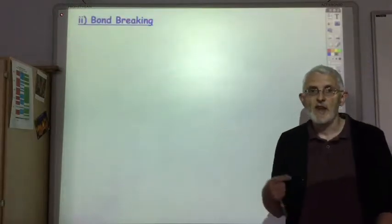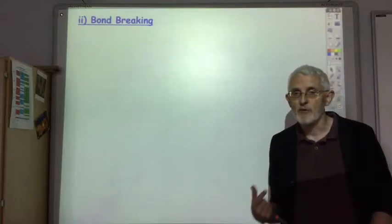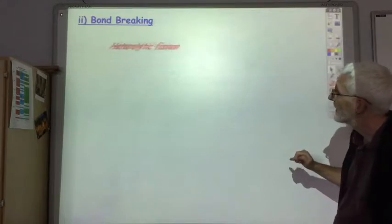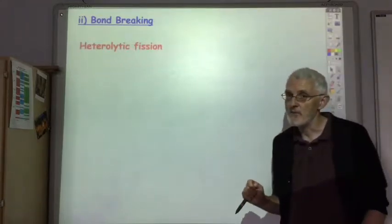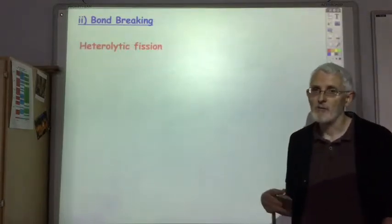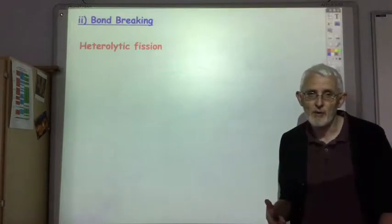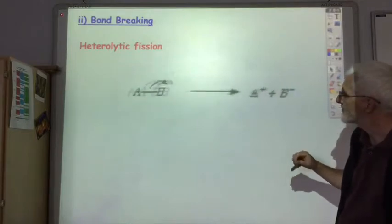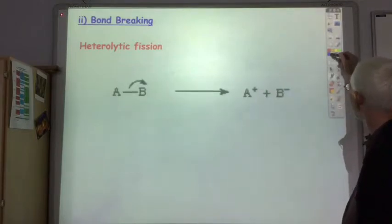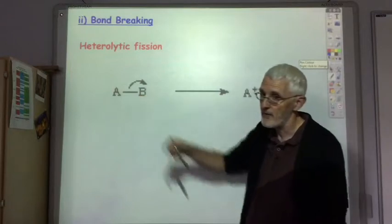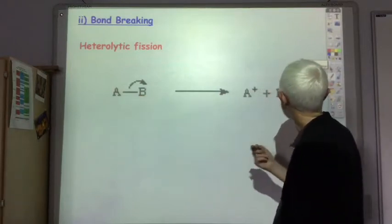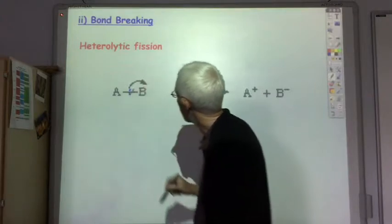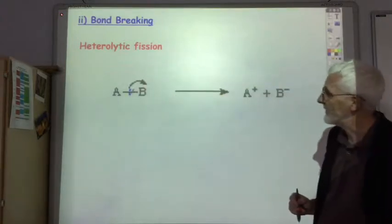Okay, in all these reactions bonds are broken and bonds are made. There's actually two different ways bonds can break. By far and away the most common and the one that we'll use 99.9% of the time is called heterolytic fission. So remember this line here represents a covalent bond which is a shared pair of electrons. In heterolytic fission,